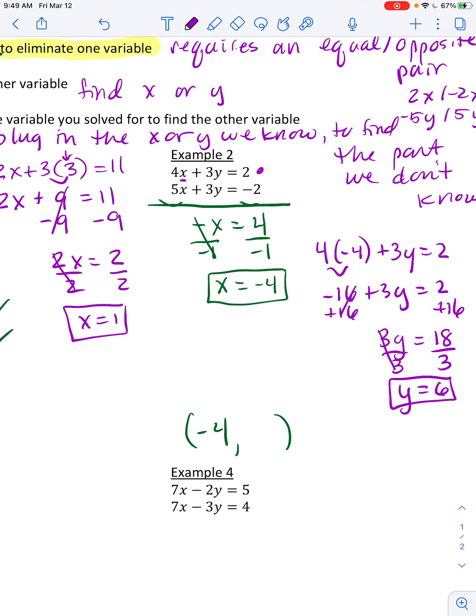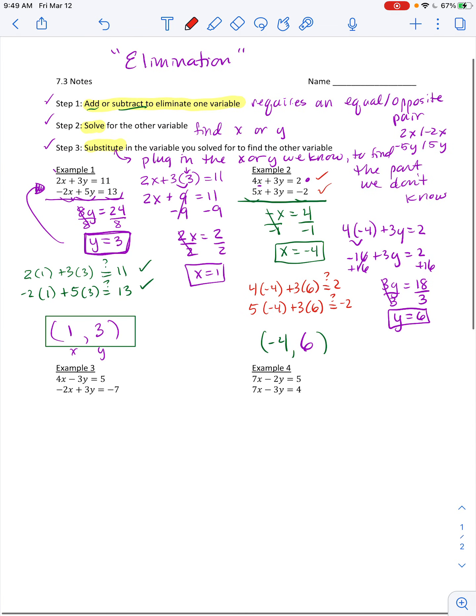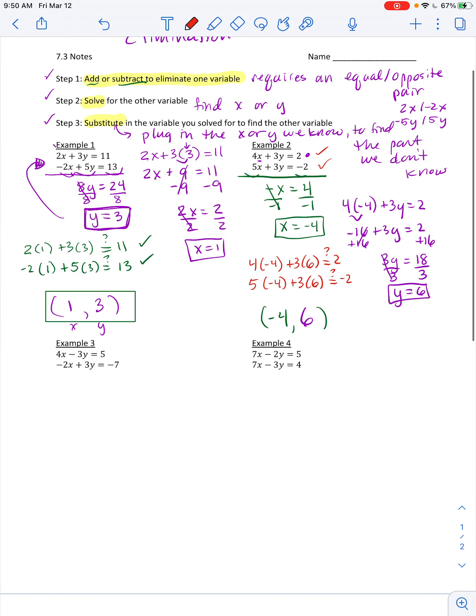So now I have y is 6. And again, if I want to make 100% sure that I'm right, I can plug in my negative 4 for x and my 6 for y in the top equation and see if it really equals 2. So that'd be negative 16 plus 18. That really equals 2. Bottom row, 5 times my x plus 3 times my y. Does that really equal negative 2? And that one would check out as well. You don't have to check them, but certainly if you're taking a test or quiz or just want to see if you know what you're doing, it's a really easy way to be able to tell if you have the right answer or not.